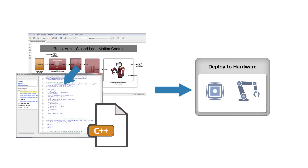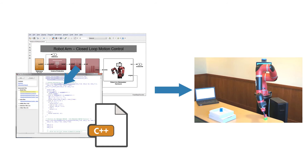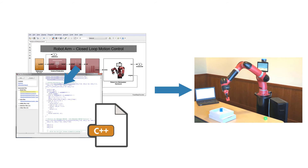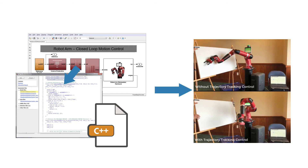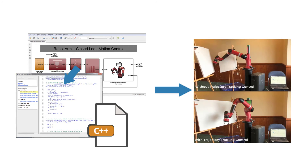In addition, you can use MATLAB Coder and Simulink Coder to deploy your robot algorithms to a simulation environment or onto robot hardware. Then you can view signals, modify parameters, and tune your deployed models.